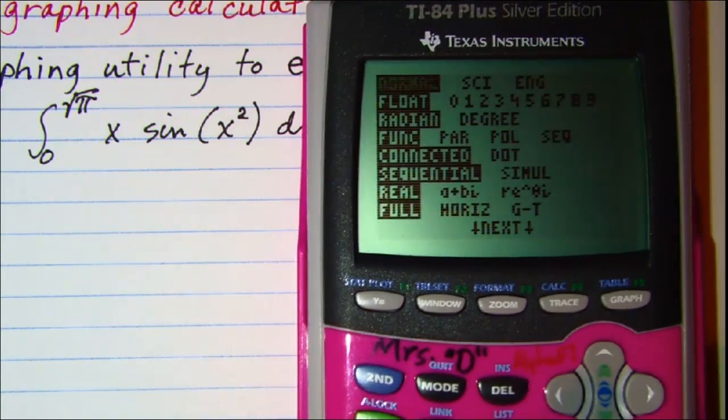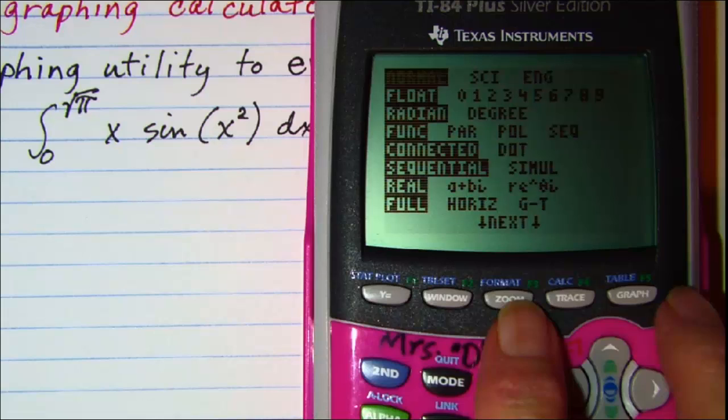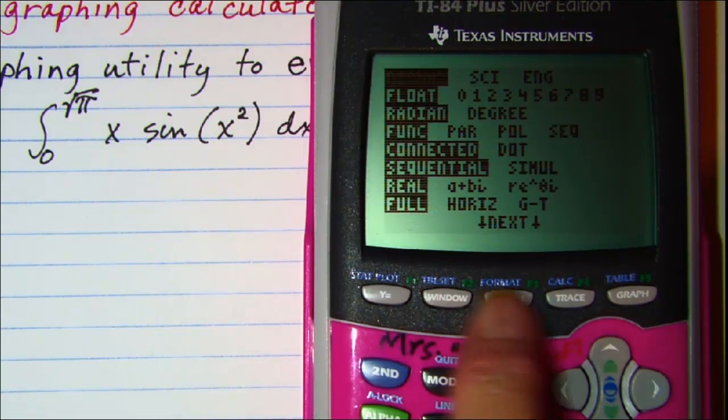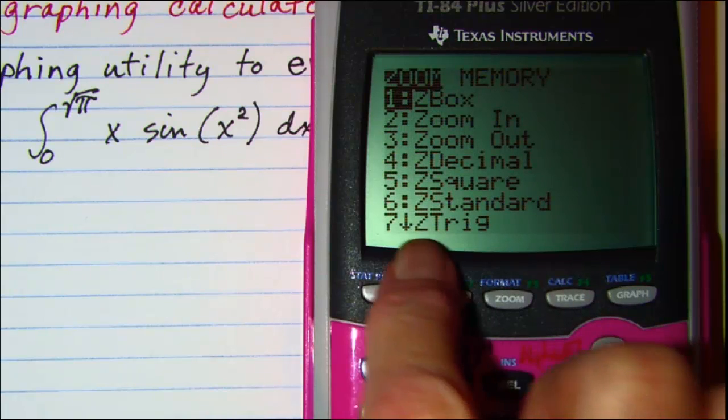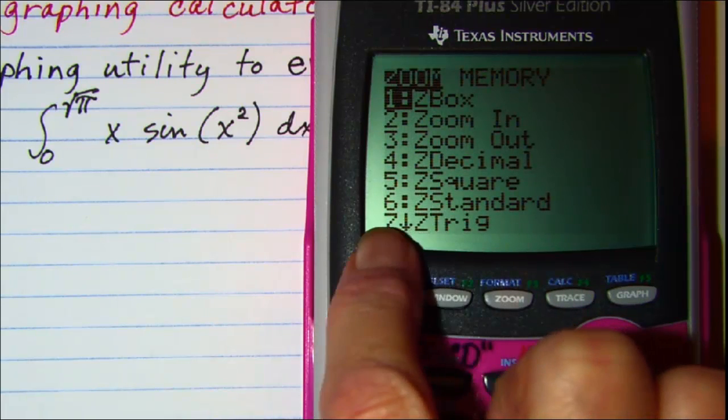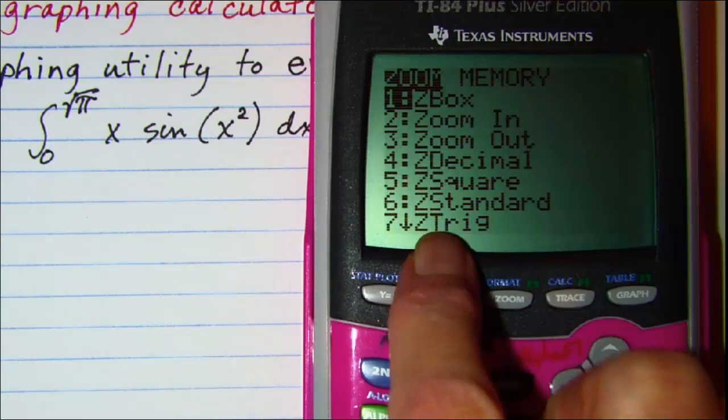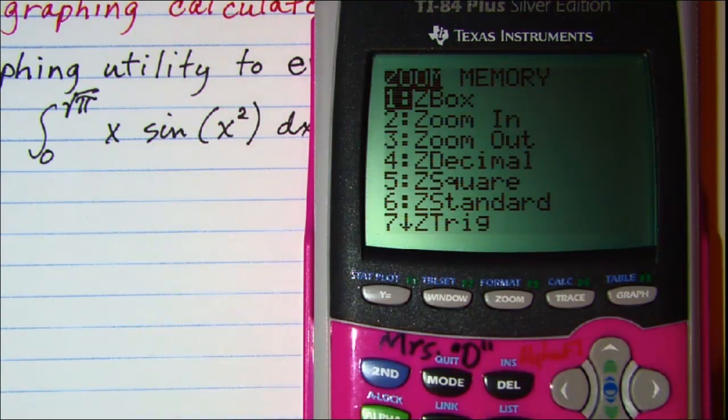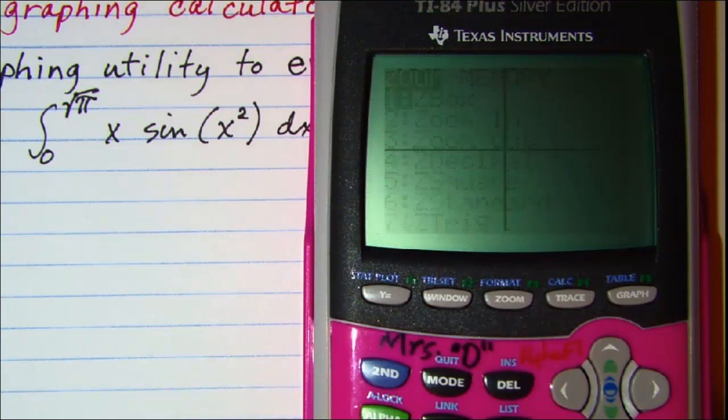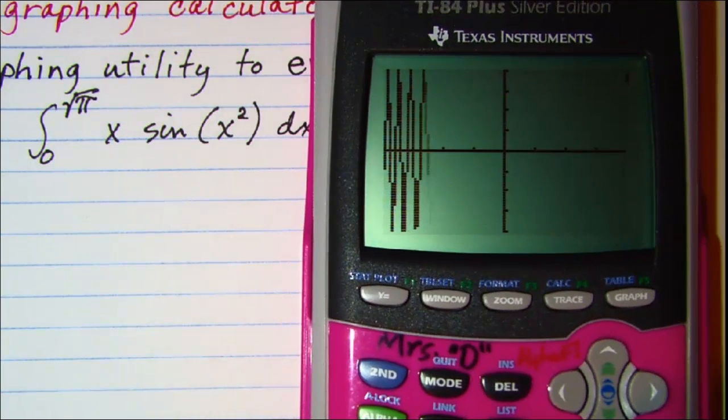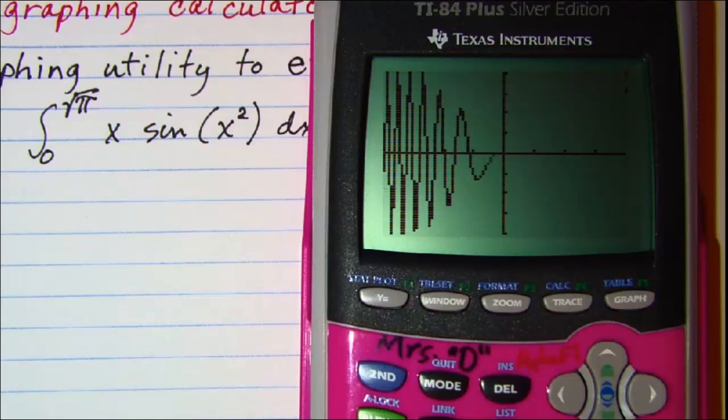And then we also need to press zoom which is the middle button here under the screen. And zoom trig which is our 7th option here will fit our window into the trig function. So I'll press 7 and then this is a picture of the function.